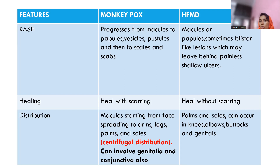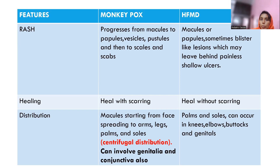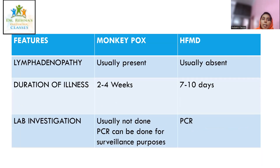Regarding distribution of lesions: in monkeypox, the rash starts from the face and spreads to arms, legs, and palms — a centrifugal distribution — and can involve the genitalia and conjunctiva. In hand foot mouth disease, palms and soles are predominantly involved, and it can also occur on knees, elbows, and genitalia. Notably, monkeypox can affect the conjunctiva whereas hand foot mouth disease does not.